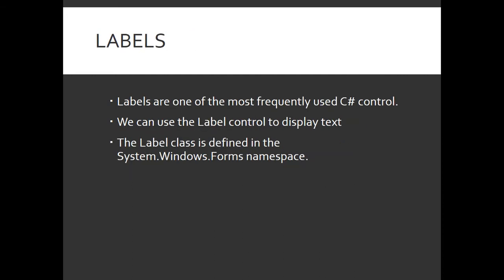Let us start with some of the basic controls that we are going to see and use in this lab. The first one is Labels. Labels are the most frequently used C# controls and these controls are used to display text. These controls are derived from the base class Forms, which is included in the namespace System.Windows.Forms.